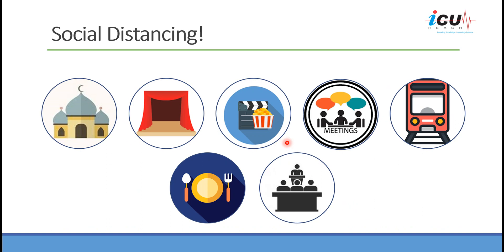Social distancing: we need to keep away from others who might be infected. Avoid crowded places and closed, non-ventilated, congested areas. Examples include worship places such as mosques and churches, theaters, cinemas, meetings with close contacts, and congested transportation — where surfaces can be contaminated and are not cleaned frequently. Also avoid eating outside, going to restaurants, and attending classes at universities or schools. By keeping people at home, we decrease the chance that the virus is transmitted among people.